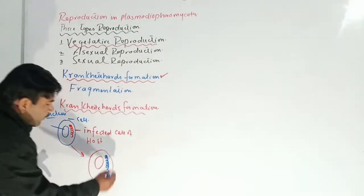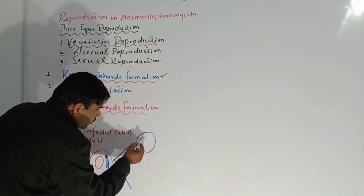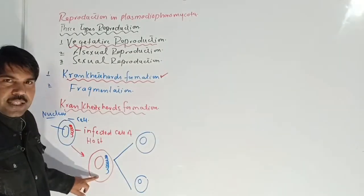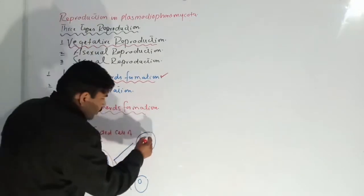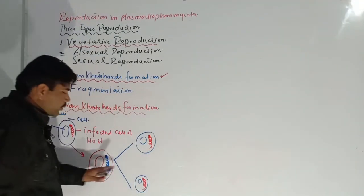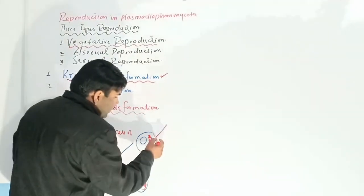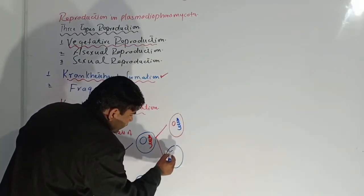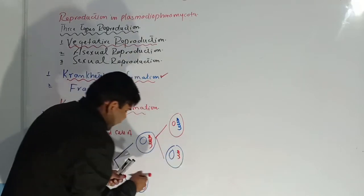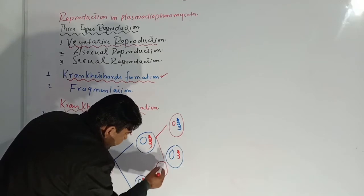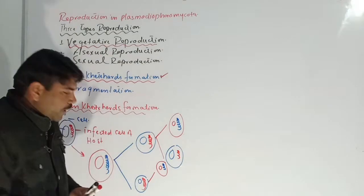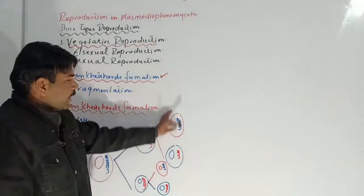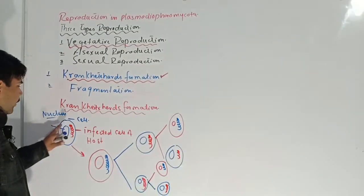Now this enlarged cell starts dividing and produces new cells. The nucleus divides, and the fungi present inside the cell also divide along with it. So with the division of the host cell, the fungi also divide. This continues — each time the cell divides, both the nucleus and the fungus divide together, producing more infected cells.